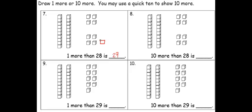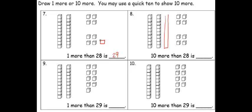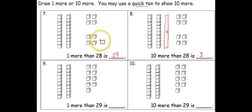Going across, I'm asked for ten more than twenty-eight. Again, I've started with my twenty-eight cubes — two groups of ten and eight single cubes. To show ten more, I'm just going to show another quick group of ten, because the direction says I can use a quick ten to show ten more. So we'll assume that this stick here represents ten, and that means I have three groups of ten and eight more. So ten more than twenty-eight is thirty-eight.